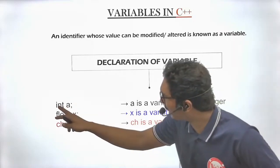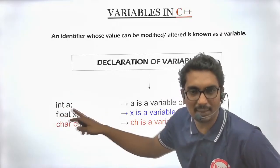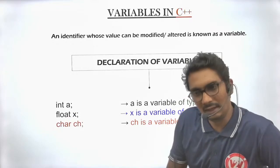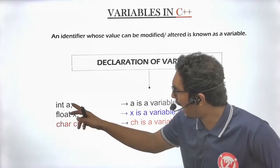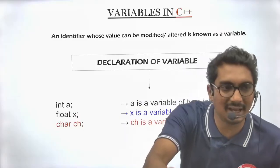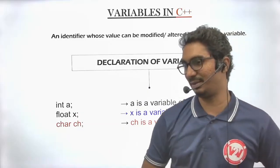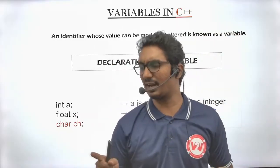Int a. A is a variable. What is my variable? Which type of variable is it? Int a. Is this clear everyone?